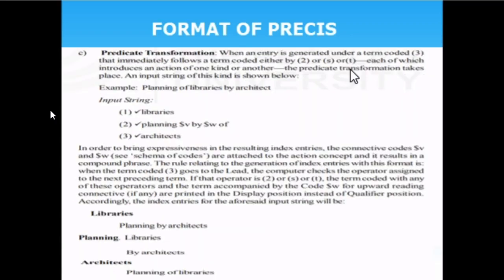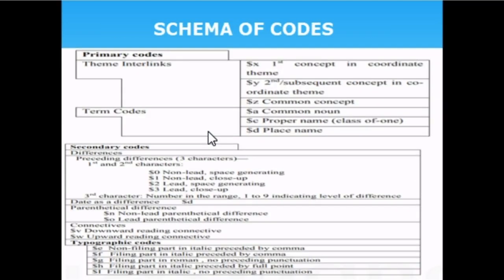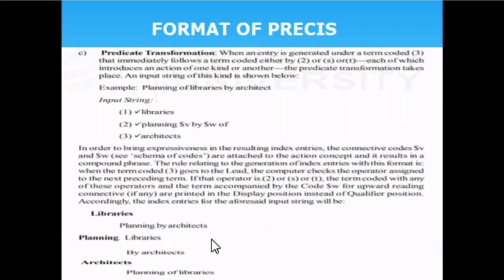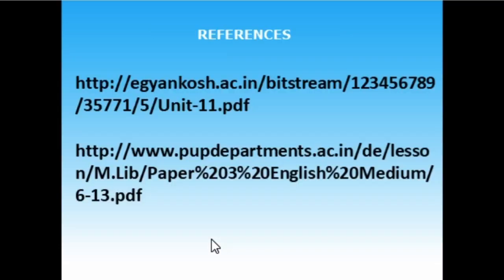A third format is the predictive transformation, where an entry is generated on a term that immediately follows a term coded by either two, S, or P. This uses dollar sign B or dollar sign W codes representing upward and downward direction in the secondary operator, connecting terms directly upward or downward. This is all about how to prepare input strings based on the PRECIS method of indexing. Please go through the references for an exhaustive overview of the PRECIS indexing system.